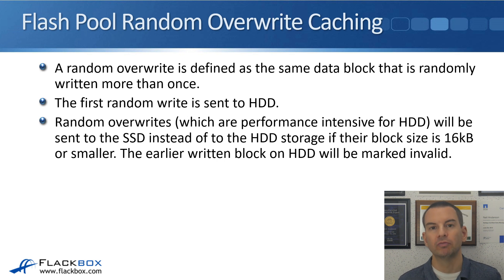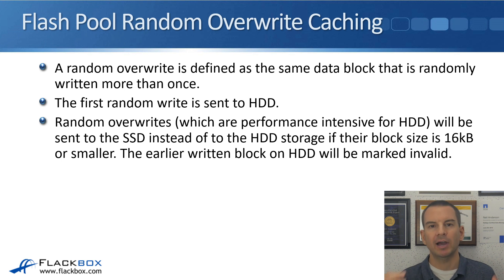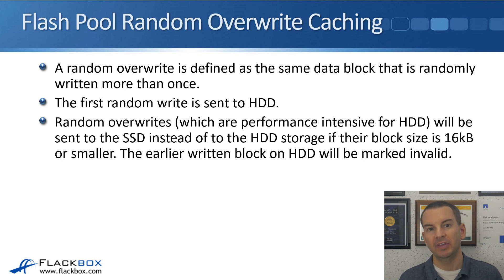Random overwrite caching: a random overwrite is defined as the same data block that is randomly written more than once. The first random write is sent to HDD. Then random overwrites — which are performance-intensive for HDDs — will be sent to the SSD instead, if their block size is 16 kilobytes or smaller. The earlier written block on HDD will be marked invalid. The new data is written to the SSDs, and the data on the HDDs is no longer valid — it's the data on the SSDs which is the good, up-to-date copy.